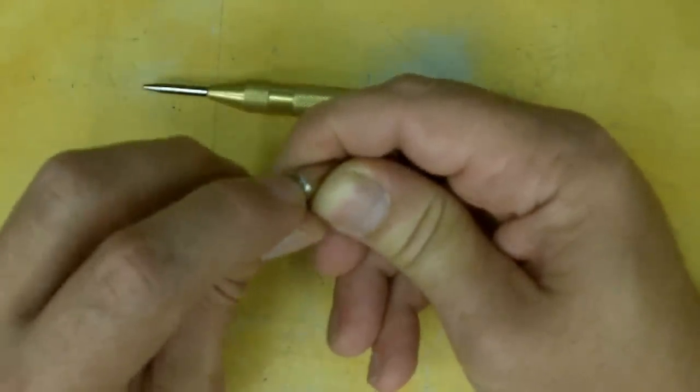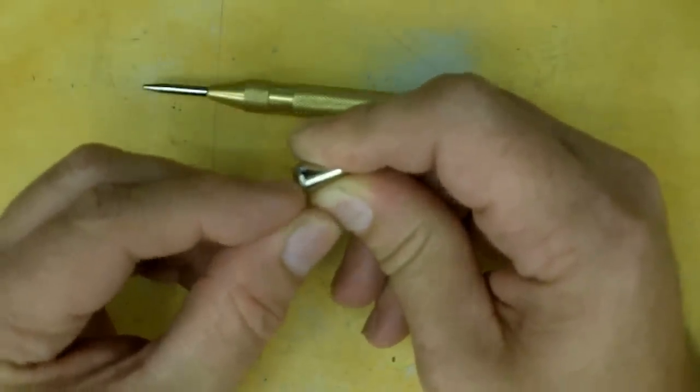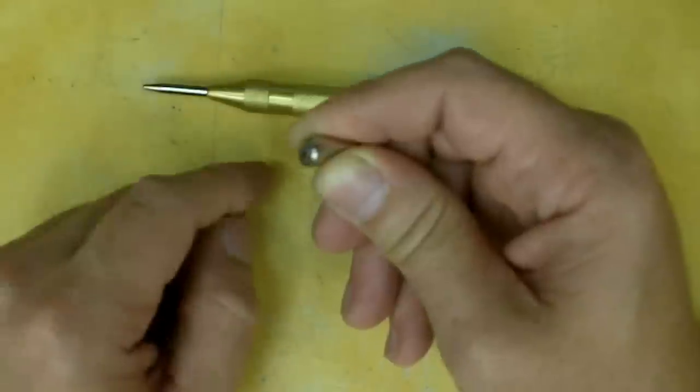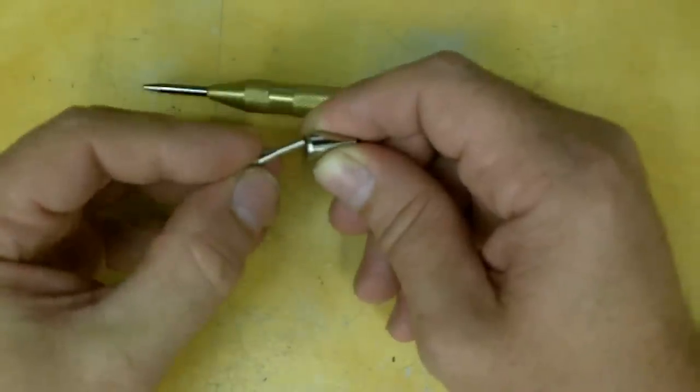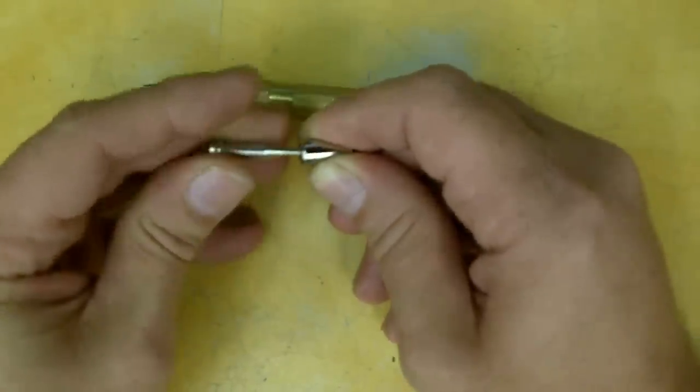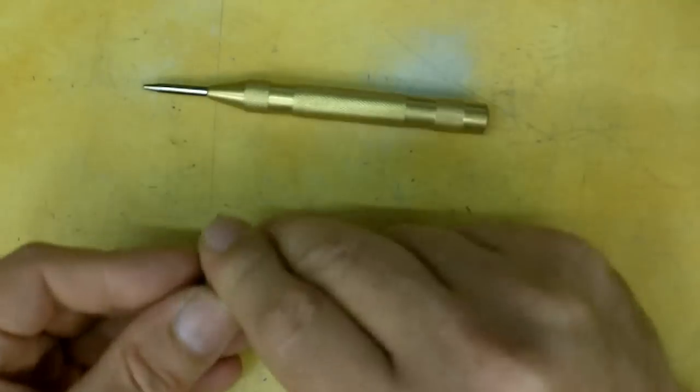there's a little burr that was sticking up right around this hole. I just simply needed to knock that burr off because it was not allowing this to get down in that hole to hit. It was catching up on a burr and it wasn't hammering.